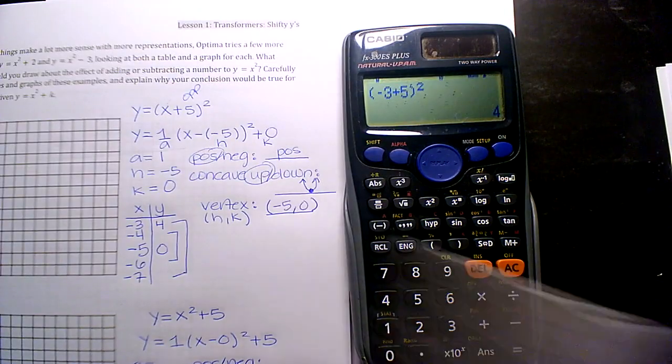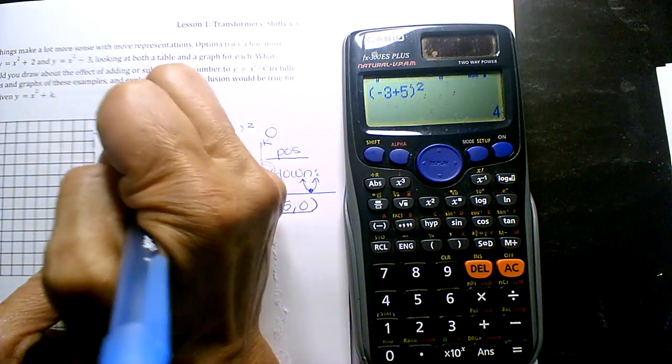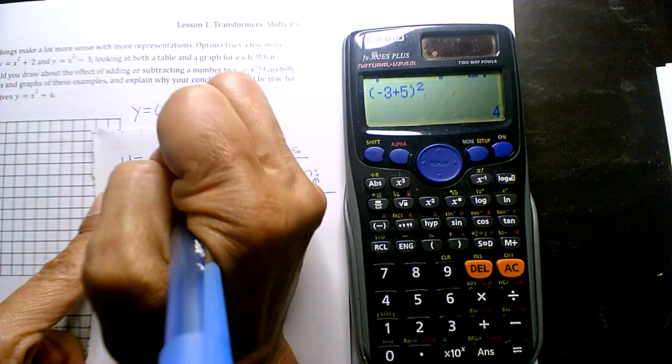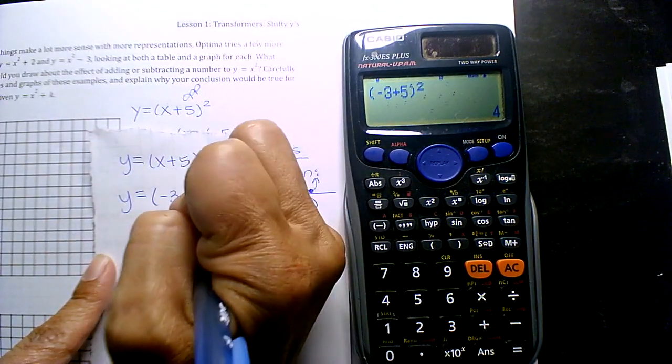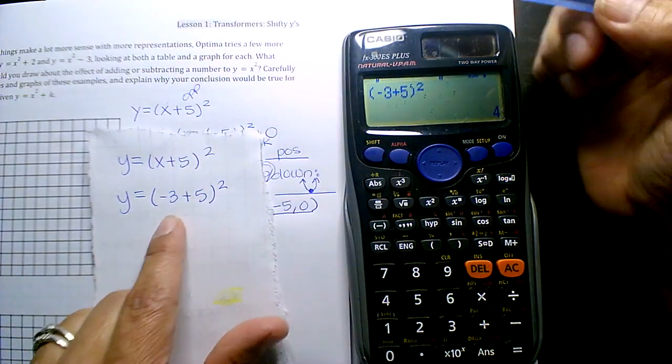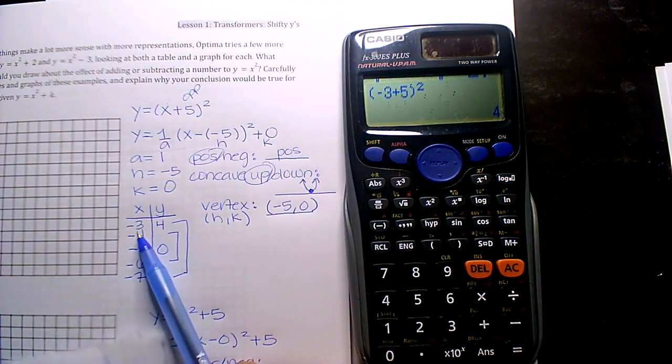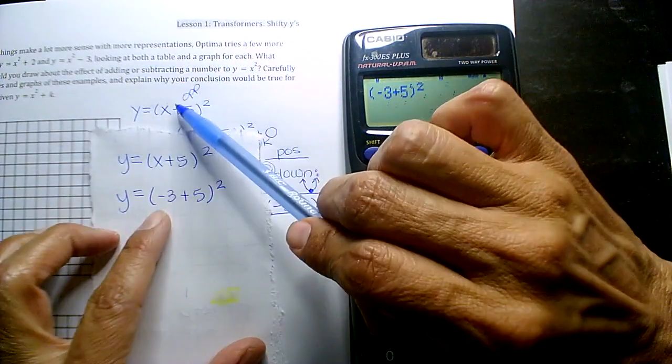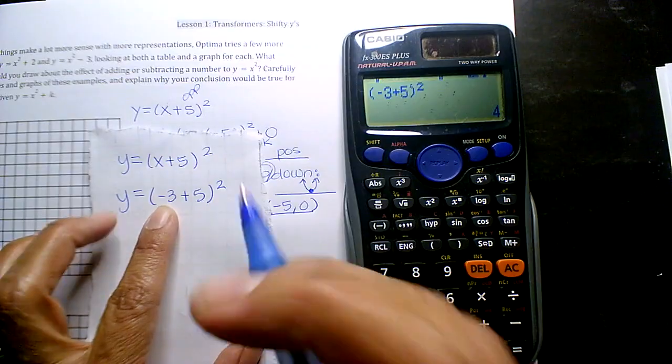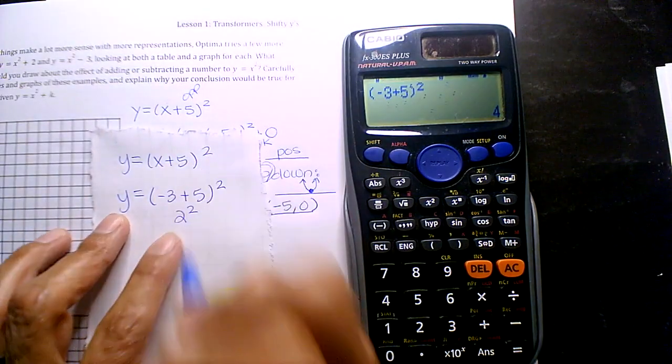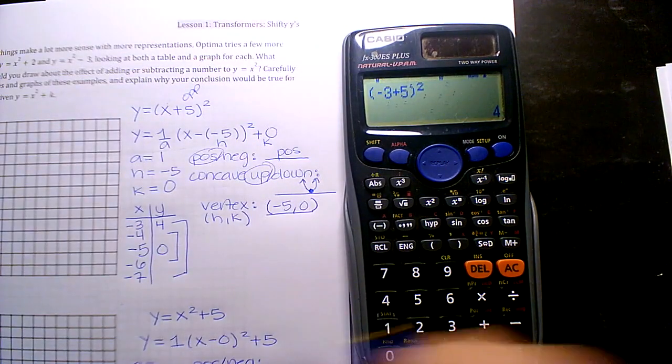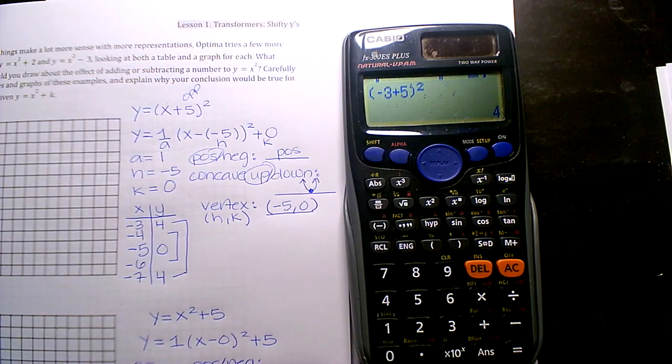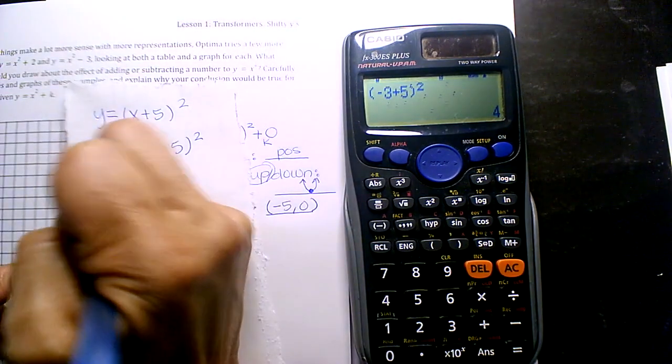Because, if you have y equals x plus five squared, and y is negative three plus five squared, I just took that negative three in the table, substitute it for x. What's negative three plus five? Two. What's two squared? Four.